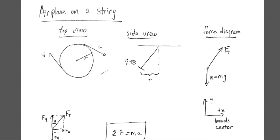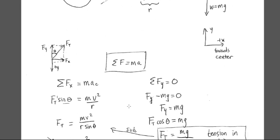Here's a force diagram. The object — my airplane or rock — has, in the vertical direction, weight pulling it downward and the tension in the string acting along the direction of the string. For these circular motion problems, we set up our coordinate system so that the positive X axis is always towards the center of the circle. You can imagine the coordinate system being inside the object spinning in a circle, moving with the object, where positive X is towards the center — the centripetal direction — and the Y direction is straight up into the air.